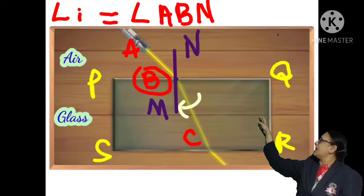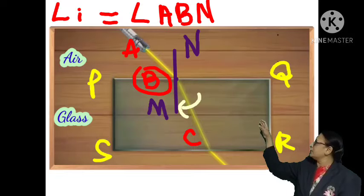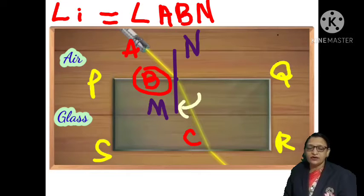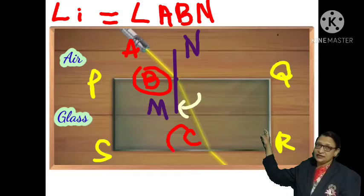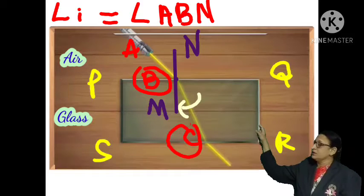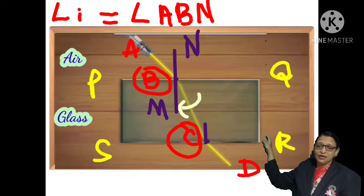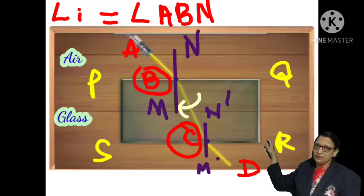Further, the light ray moves out from the glass slab into the air — that is, from the denser medium to the rarer medium — and here the speed of light increases. The light ray coming out from the glass slab is called the emergent ray.